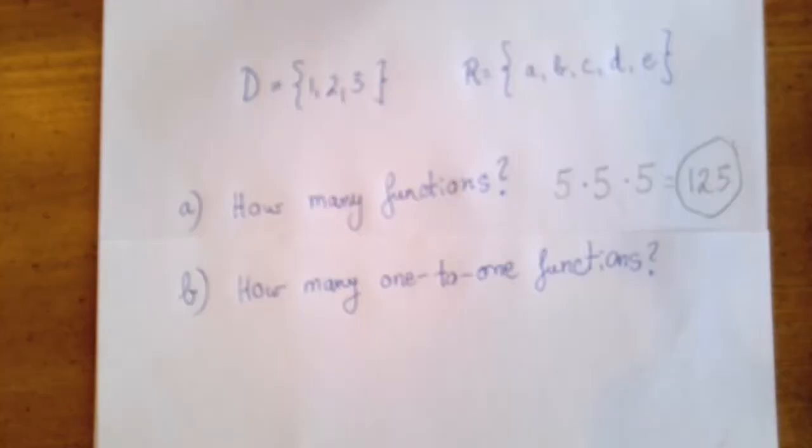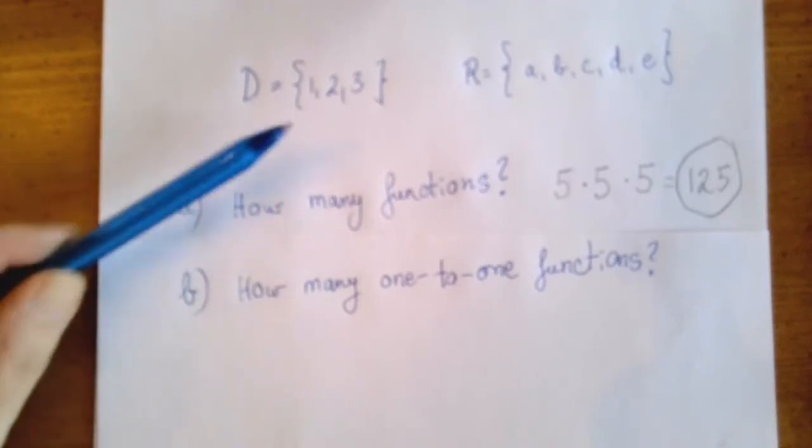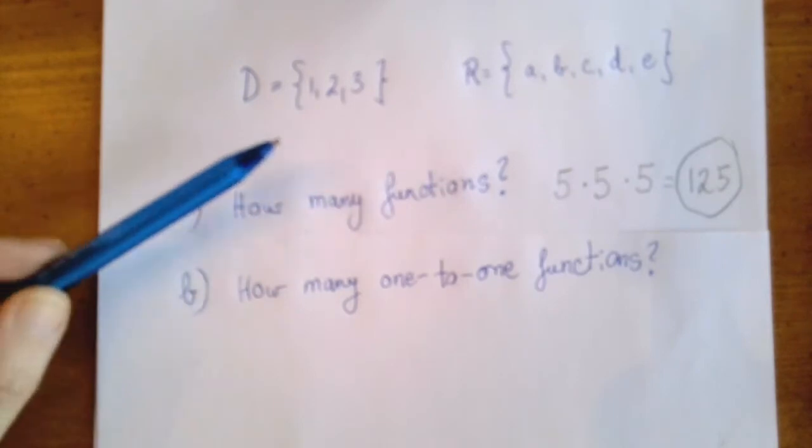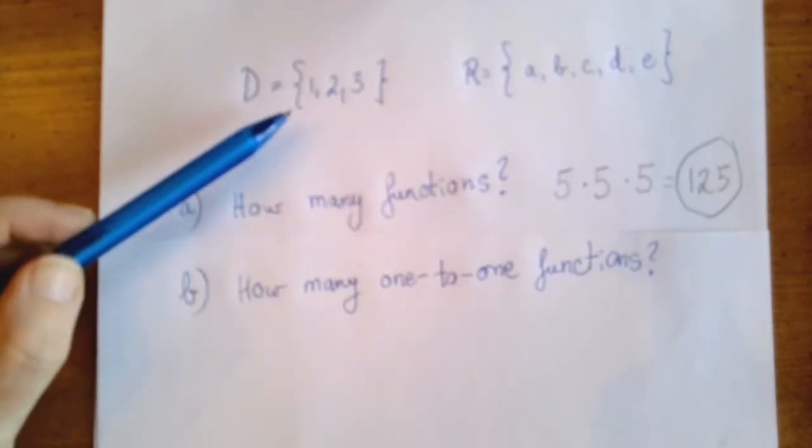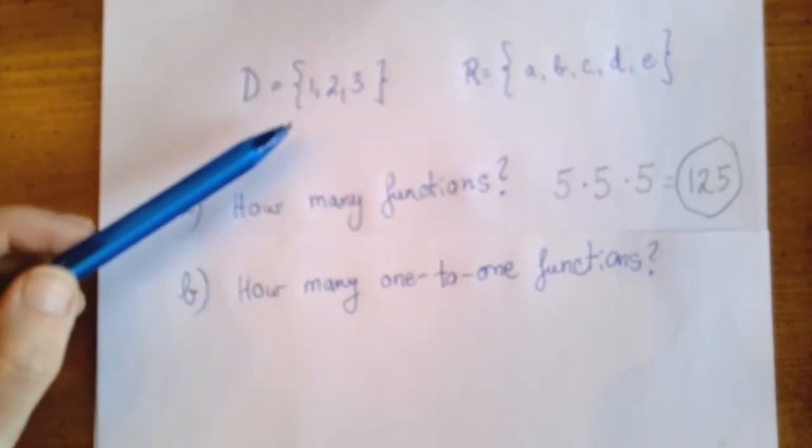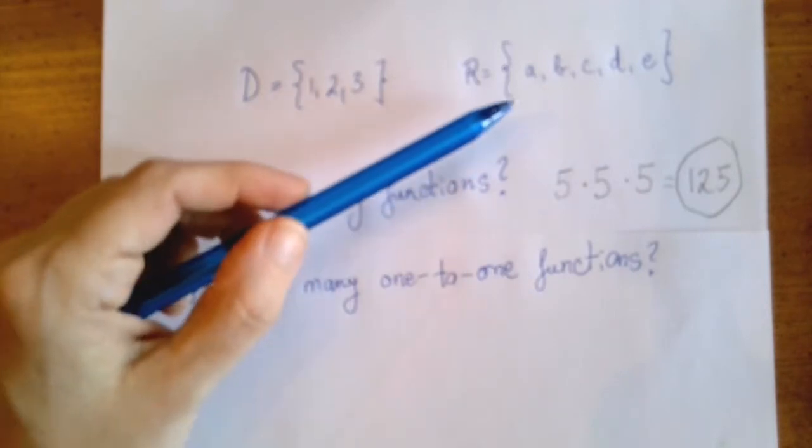Now the question is the same, but this time we need to count the one-to-one functions. A function is one-to-one if two different values of the domain are not allowed to get the same thing assigned to them. In other words, all elements of the domain have their own element in the range.